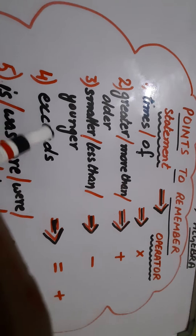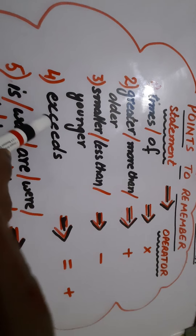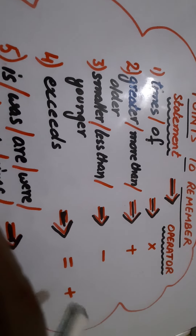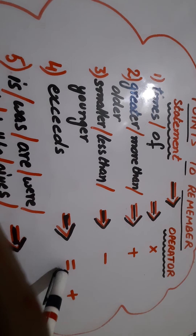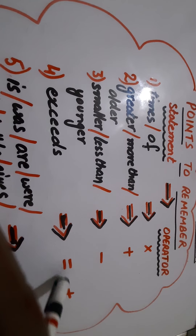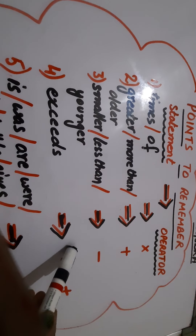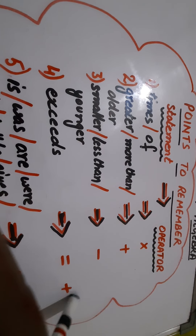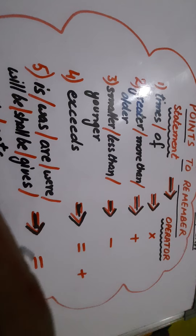A very important word which we often see in statement questions is 'exceeds'. For 'exceeds', we use two mathematical operators: equal to, and plus. First we will use equal to, then plus. And obviously some number will be given in the question from which we will know.